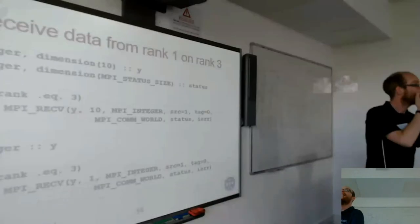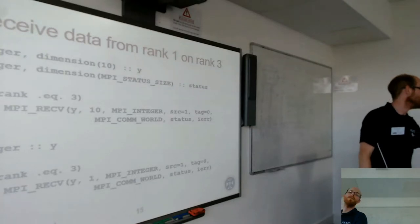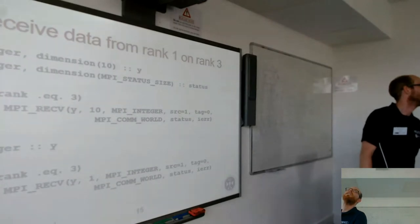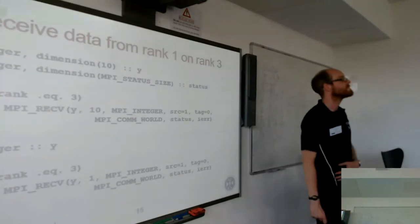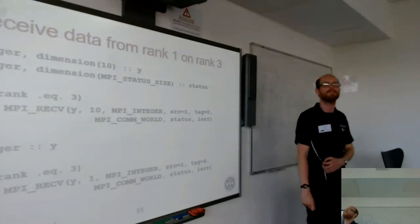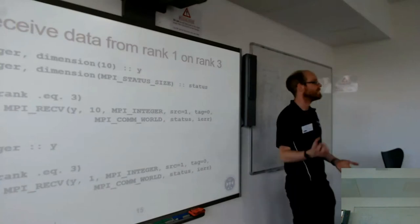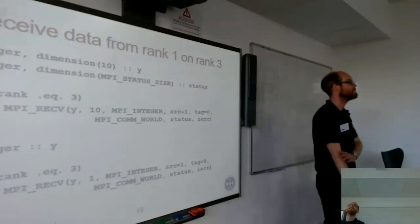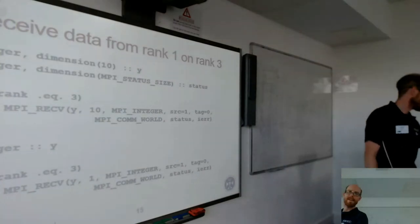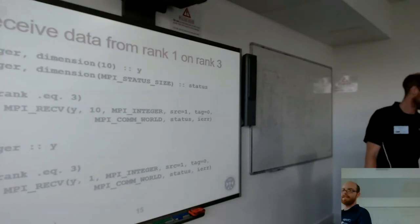So the status contains the sender information. If you do it the other way around—say if I'm rank three, you can receive from anybody and then check the status. So that's one thing where status is useful: if you've done a receive from everybody, you can then look at that and find out who you actually got your message from.